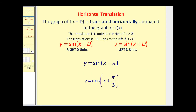Let's start by talking about horizontal translations. The graph of f(x - d) is translated horizontally compared to the graph of f(x). This next part can be a little confusing: the translation is d units to the right if d is greater than zero. Notice the form is x minus d, so for example, if we're looking at y equals sine of (x - d), since it's minus a positive d, it will shift right d units.